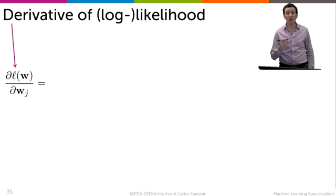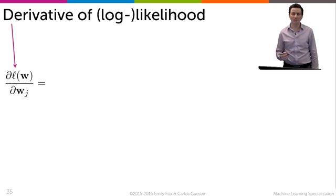To get this final gradient ascent algorithm for logistic regression, all we have to do is define the derivative with respect to each parameter w_j. So what's the derivative of the likelihood function with respect to w_j?